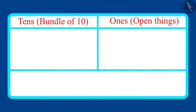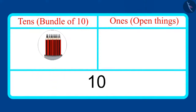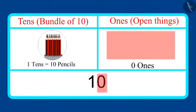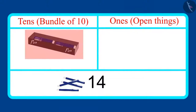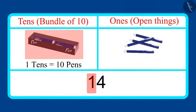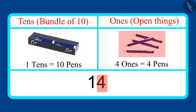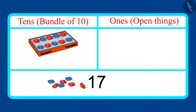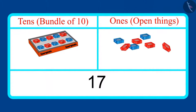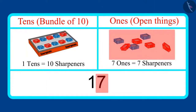Come on, children. Let us now write these numbers in the form of tens and ones. First, let's look at the number of pencils, which is 10. This means it has 1 ten and 0 ones. Now let's look at the number of pens, which is 14. Can you tell me how many tens and ones are there in it? This is one bundle of 10 pens and 4 more pens. That means it has 1 ten and 4 ones. Let's look at the number of sharpeners, which is 17. If we make one bundle of 10, then 7 more sharpeners remain, which means it has 1 ten and 7 ones.